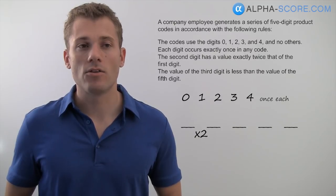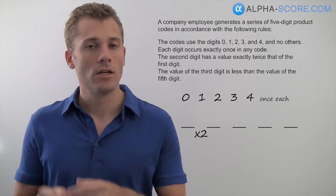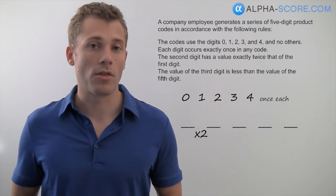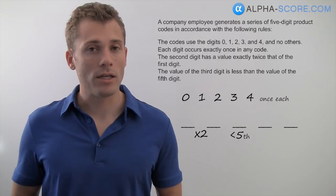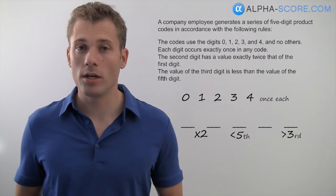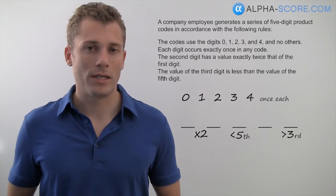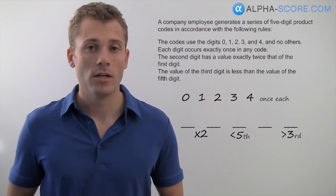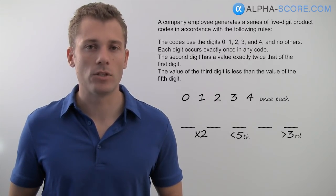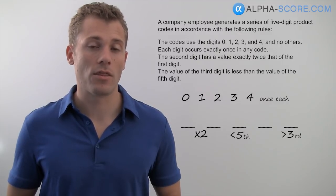Our final rule tells us the value of the third digit is less than the value of the fifth digit, so our third place is less than our fifth place. We'll use greater-than and less-than signs. Under the third spot write 'less than fifth,' and under the fifth spot write 'greater than third.' Be careful with these symbols — make sure you know which means greater than and which means less than, as many students mix them up when plugging values in.